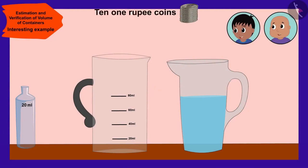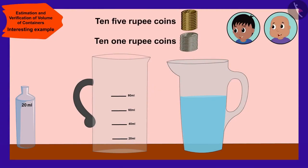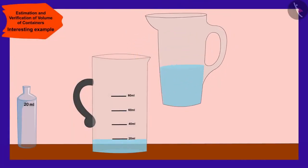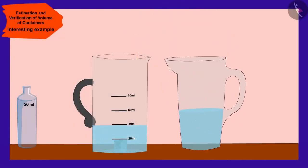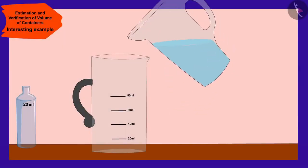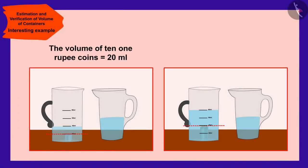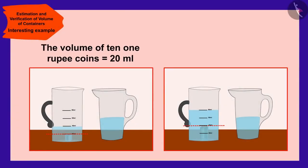Let us find out the volume of 10 one-rupee and 10 five-rupee coins. Raju and Babalu used the measuring jug made by them and found that the volume of 10 one-rupee coins is 20 ml.